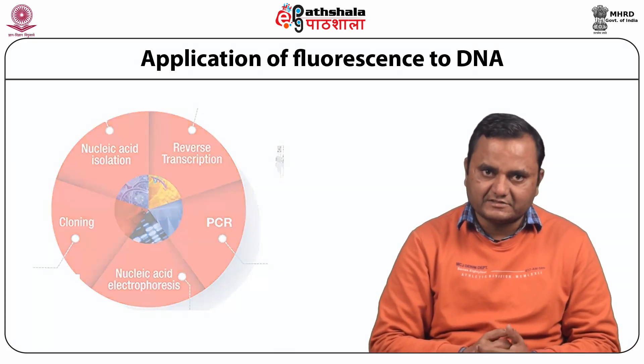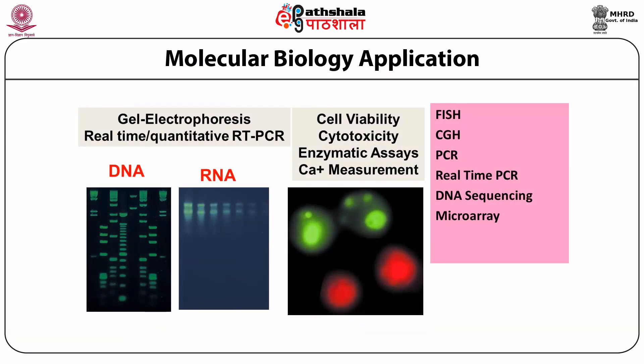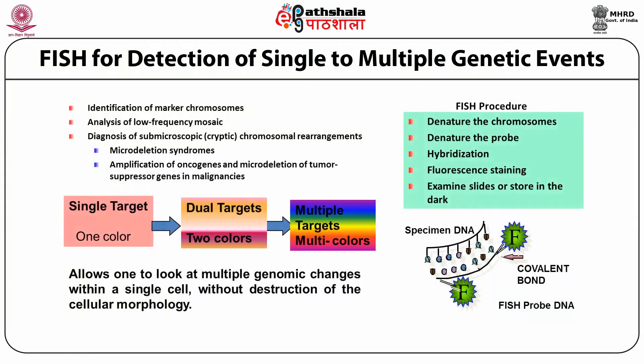We show the molecular biology applications of FRET such as gel electrophoresis and real-time PCR. Bands of DNA and RNA are only observed when bound to fluorophores. Cell viability, cell cytotoxicity assay, enzyme assay, and calcium measurement are major applications of fluorescence. Other techniques based on fluorescence include FISH, CGH, PCR, real-time PCR, DNA sequencing, and microarray.